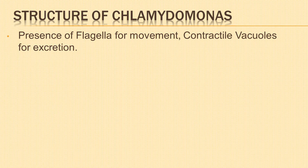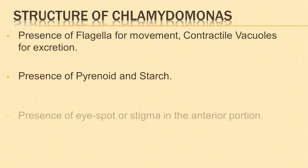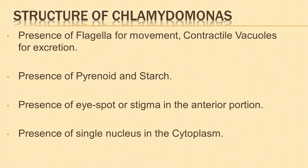At the pointed anterior end, there are thin, long, thread-like structures called flagella. There are two contractile vacuoles at the anterior end, supposed to be organs for excretion. A single pyrenoid is embedded in the chloroplast with a starch sheath. The flagellated cells have an eye spot or stigma in the anterior portion, which remains inserted at one side of the chloroplast. A single nucleus is present in the inner cytoplasm where volutin grains may also be present. The reserved food is starch, composed of amylose and amylopectin.